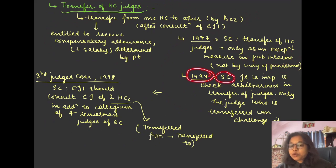In 1994, the Supreme Court said that judicial review is important to check the arbitrariness in the transfer of judges. So if there is a transfer, then you can also check the matter. That it was not arbitrary, it was not random. So this is why the judicial review can also be done by the judiciary, the courts. Only the judge who is transferred can challenge it. But of course, if it is arbitrary, then the judge who is transferred can challenge it.